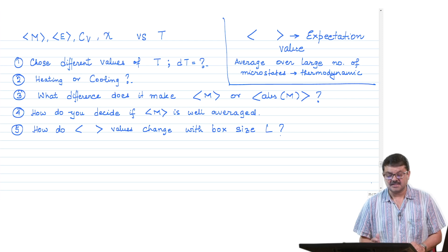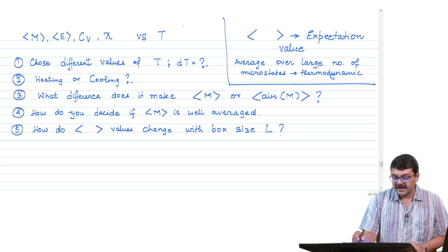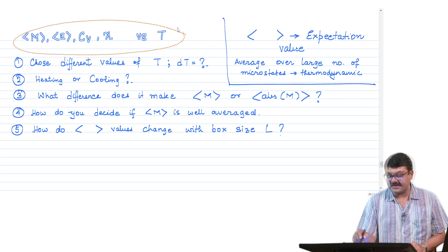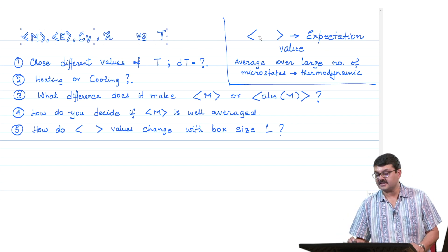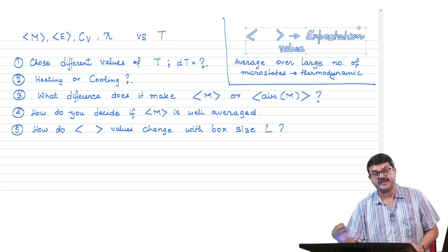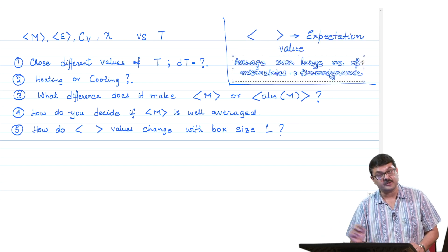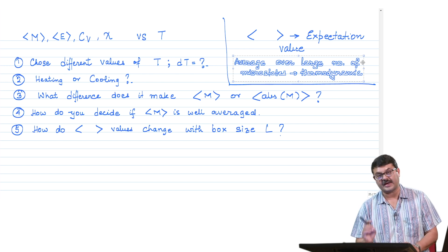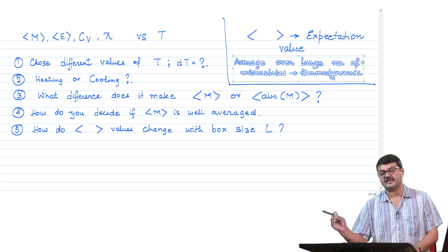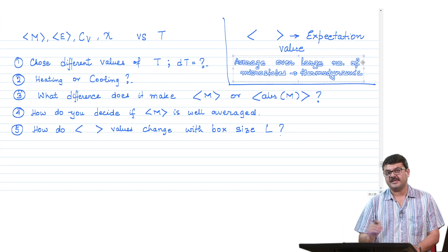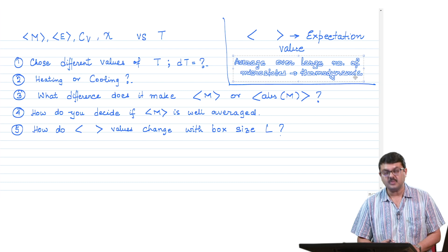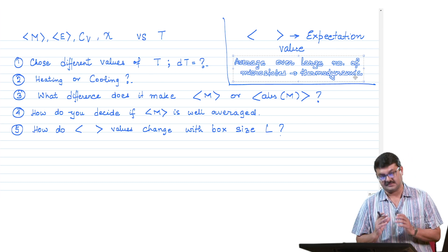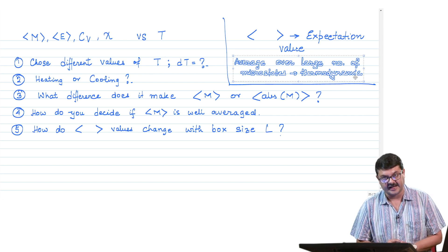With this background from last class, what we are going to do today is systematically look at the calculation of average m, average e, Cv, and chi versus temperature. The angular brackets denote expectation values — thermodynamic averages over different microstates. You calculate the average by summing the instantaneous magnetization over all accessed microstates and dividing by the total number, giving the thermodynamic value you measure in the lab or calculate using statistical mechanics.